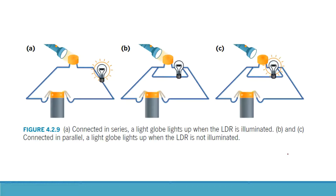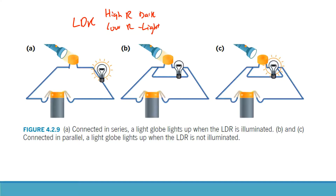Here are three circuit examples using an LDR. Remember: LDR has high resistance in the dark and low resistance in the light. In the first example — a series circuit — if light shines on the LDR, the LDR has low resistance, which means a low voltage drop across it, so a high voltage drop is available across the light bulb. The light bulb turns on when light shines on the LDR.